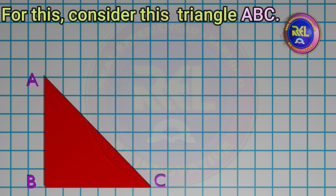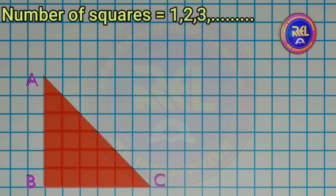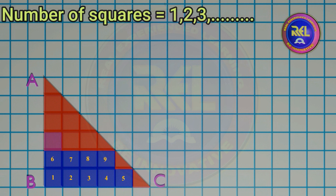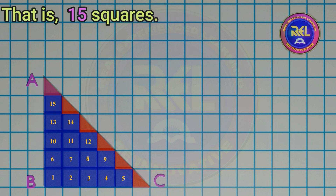Now, we shall find its area by counting the number of unit squares. The number of full squares is equal to 15.